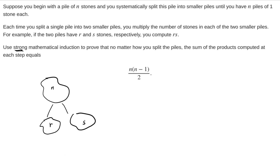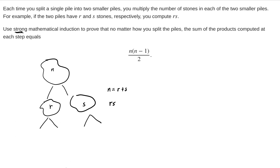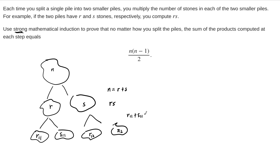If we split the pile into r and s, then n has to equal r plus s — the split has to be even, we can't lose any stones. Then we multiply r times s. We systematically continue this process: as long as there's more than one stone in any pile, we split into smaller piles. So r11 plus s11 equals r, and r12 plus s12 equals s, and we multiply r11 times s11, r12 times s12.